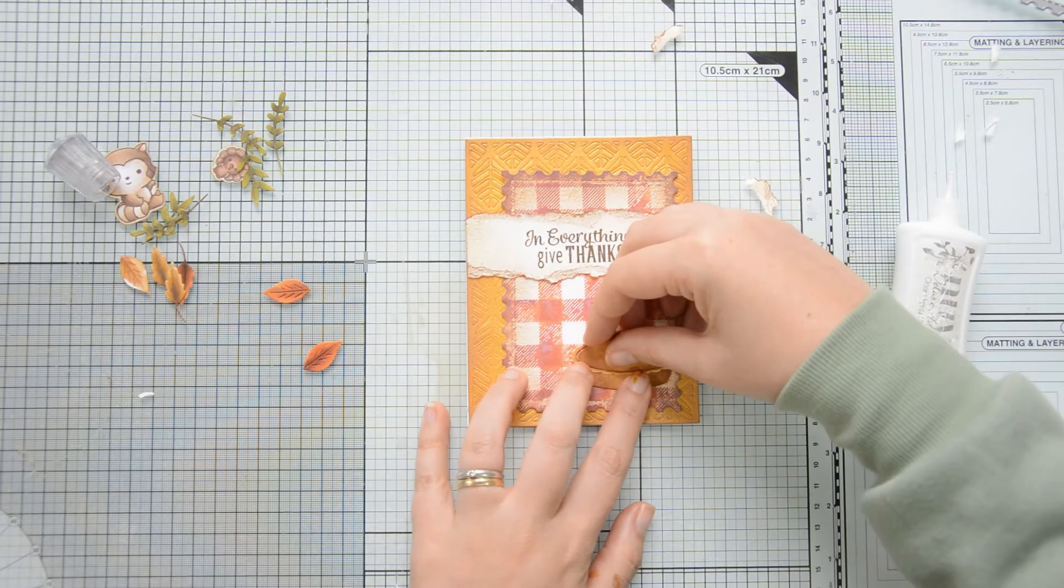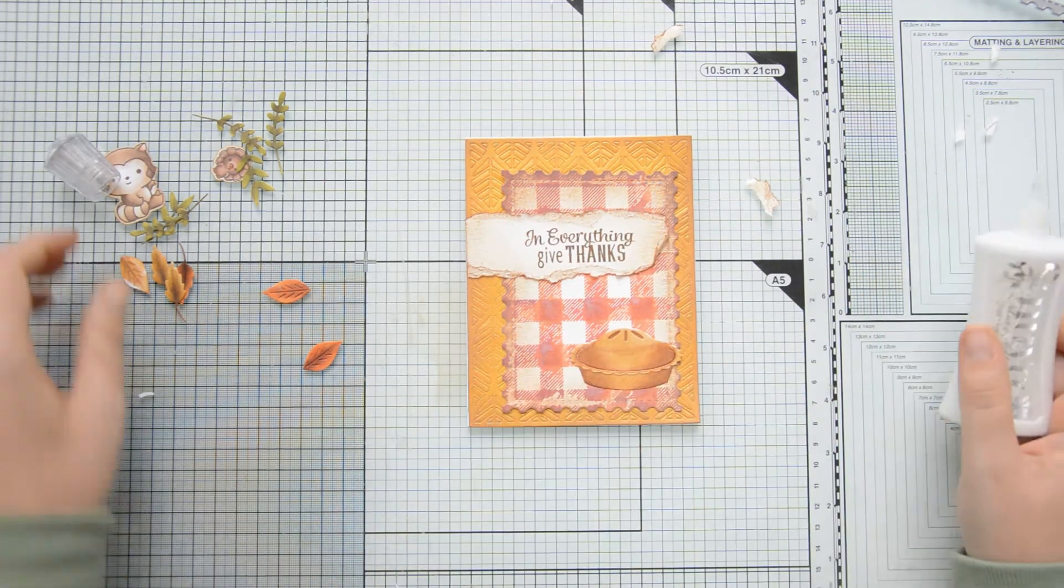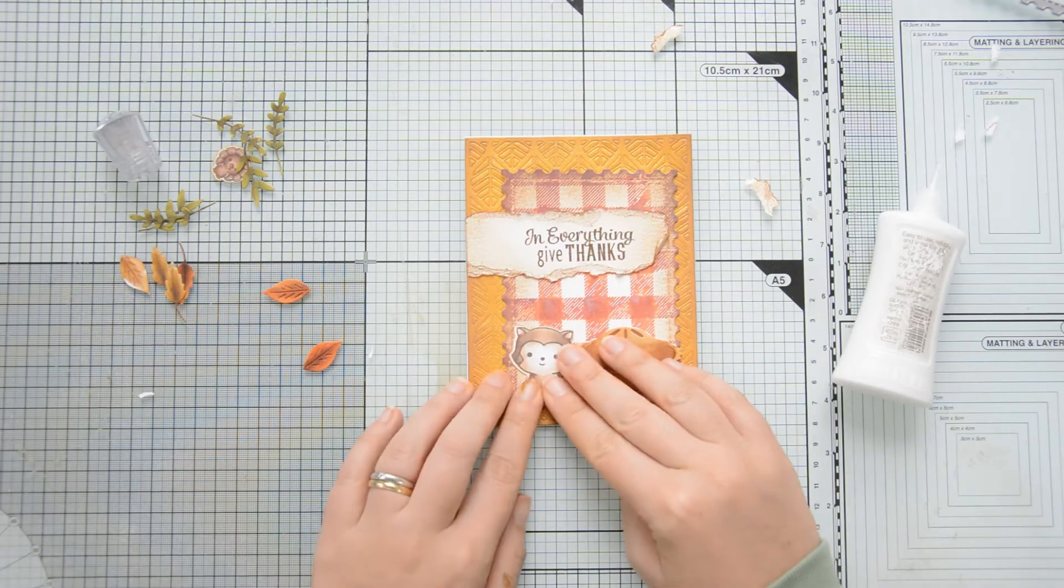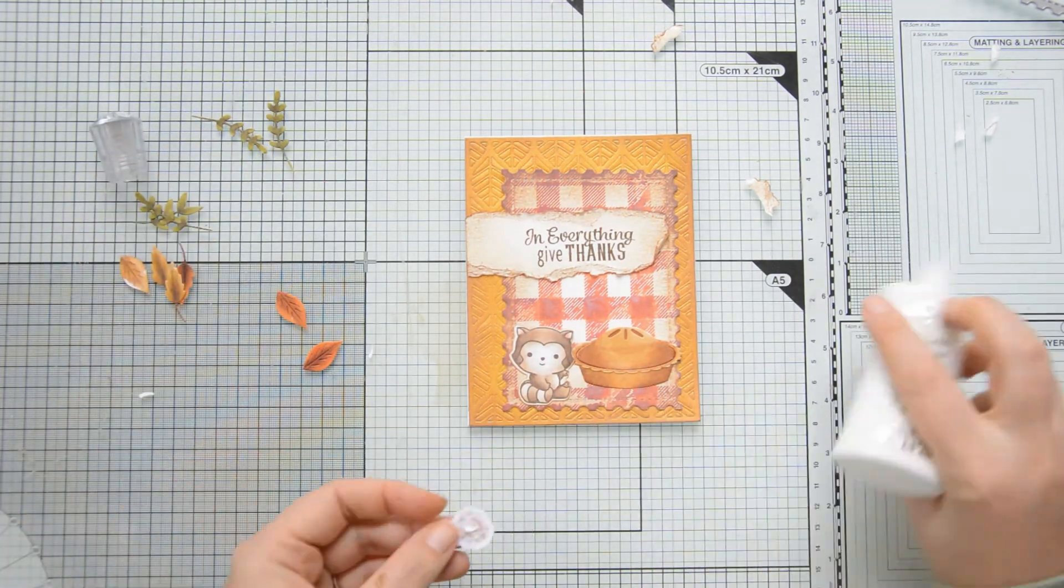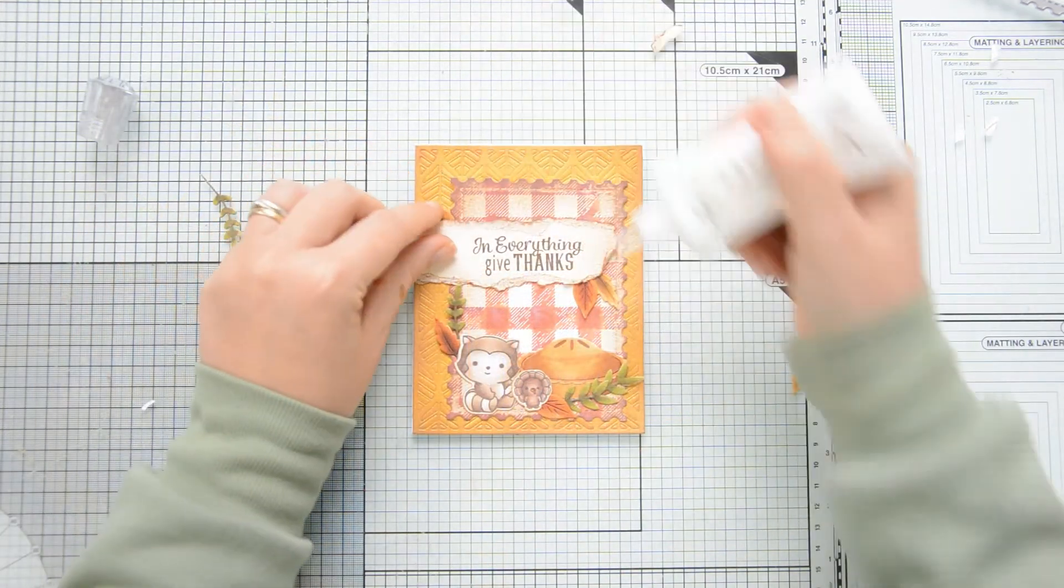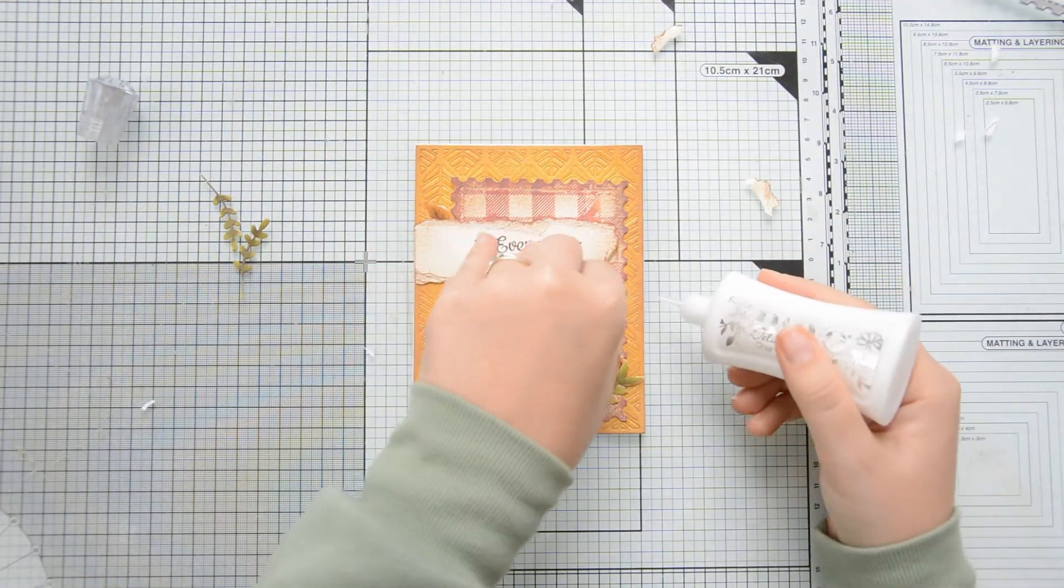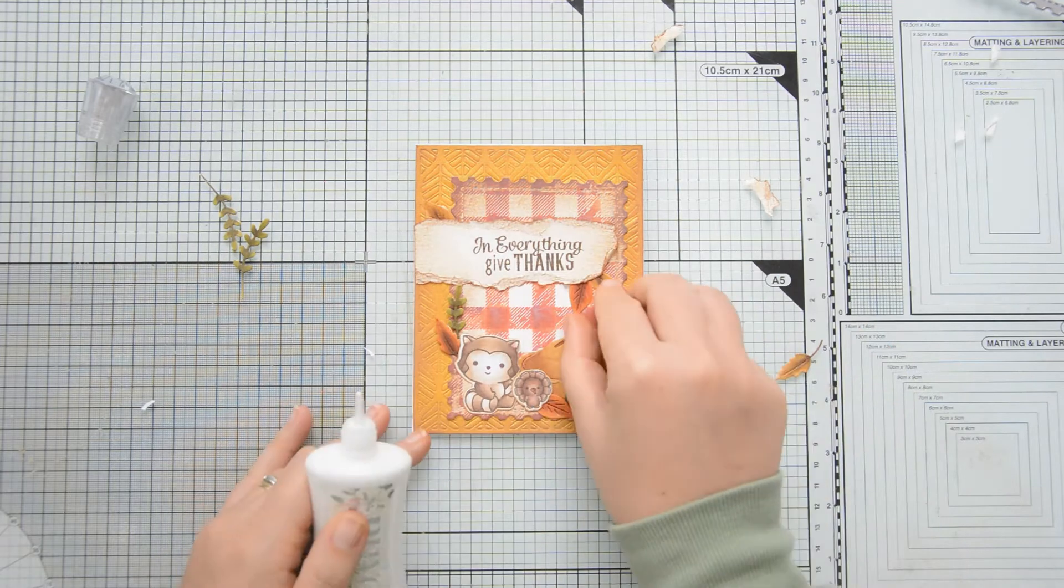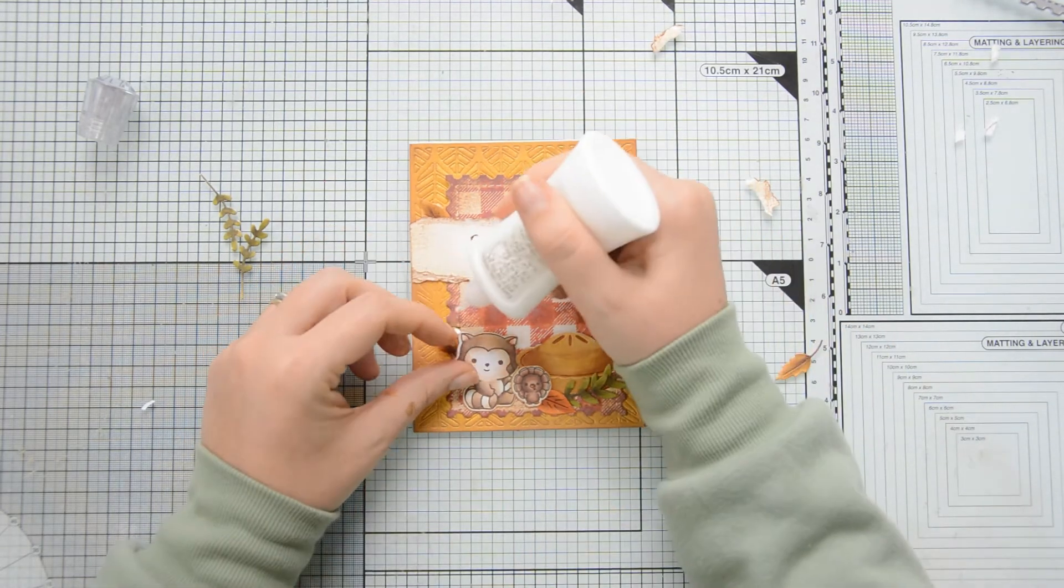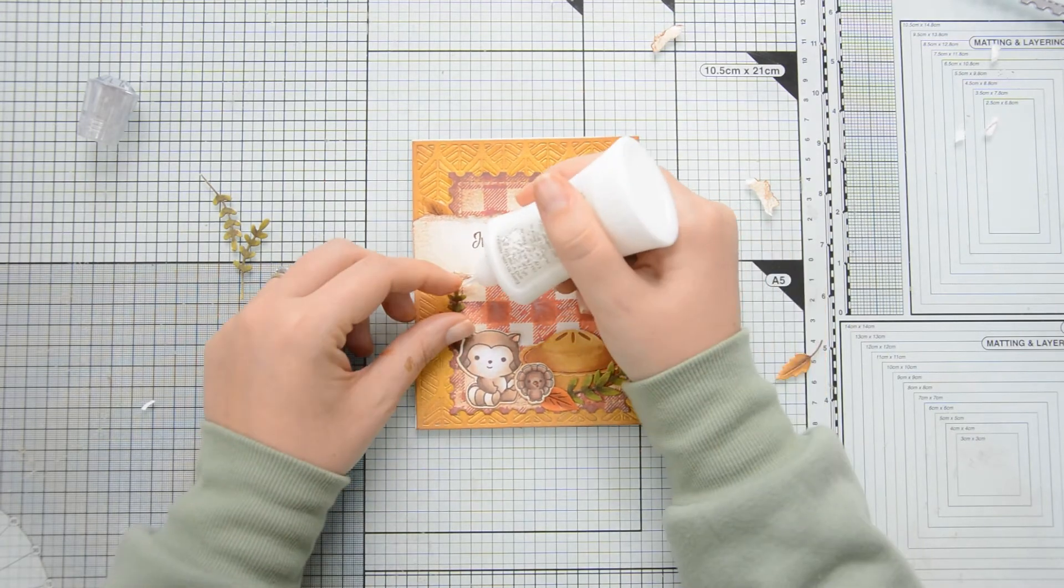Next I adhered my images. I started from the pie that I glued down to the bottom right corner of that postage stamp panel and then I added the raccoon and the turkey. I arranged my die cut branches and the leaves all over the card front to fill in the design a little bit more and I glued them down with my Nuvo Deluxe adhesive.